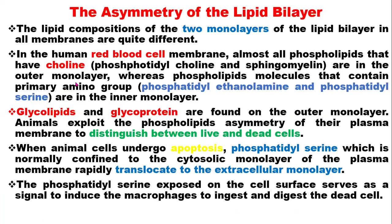Now let's look at the asymmetry of the lipid bilayer. The lipid composition of the two monolayers of the lipid bilayer in all membranes are quite different. There is a portion facing inside and another facing outside this bilayer. In human red blood cells, almost all phospholipids containing choline — which is phosphatidylcholine — are in the outer monolayer, whereas phospholipid molecules containing primary amino groups are in the inner monolayer. Glycolipids and glycoproteins are also found on the outer monolayer.